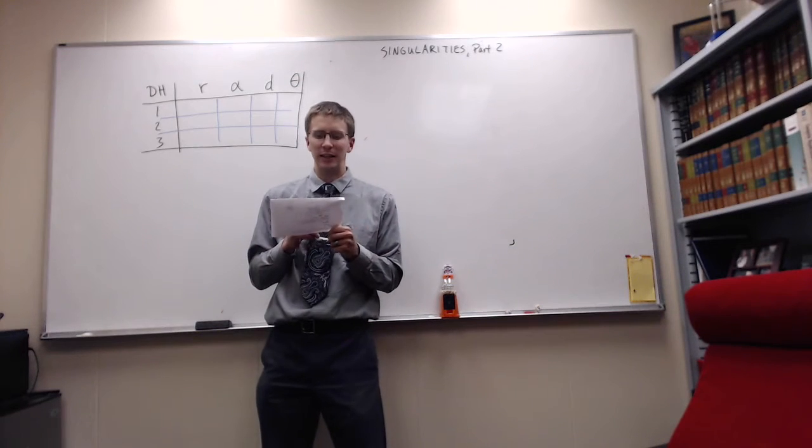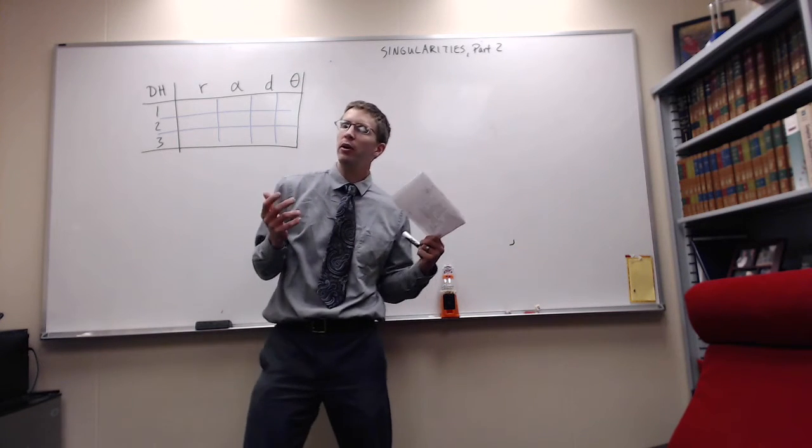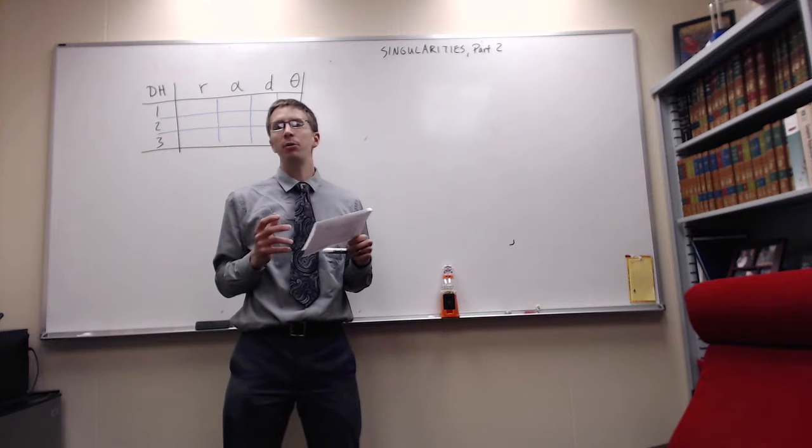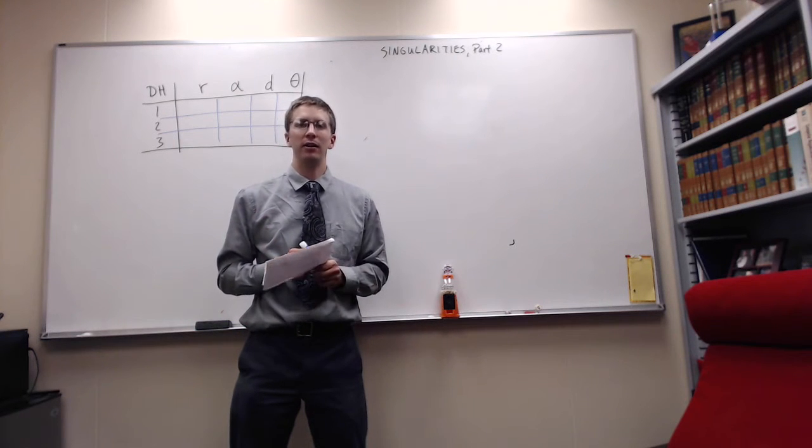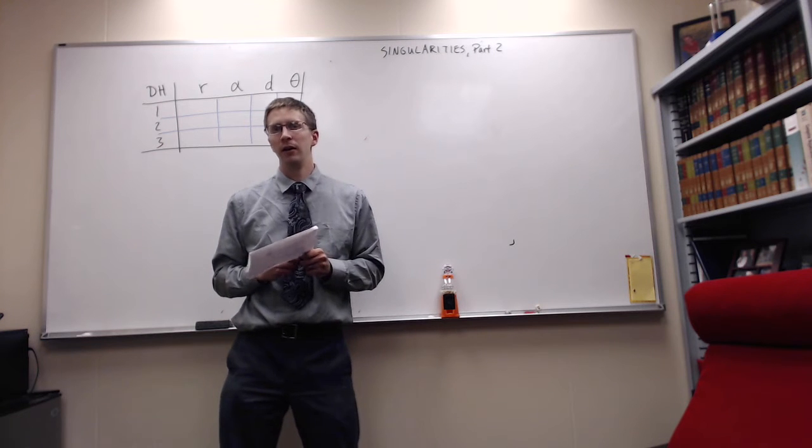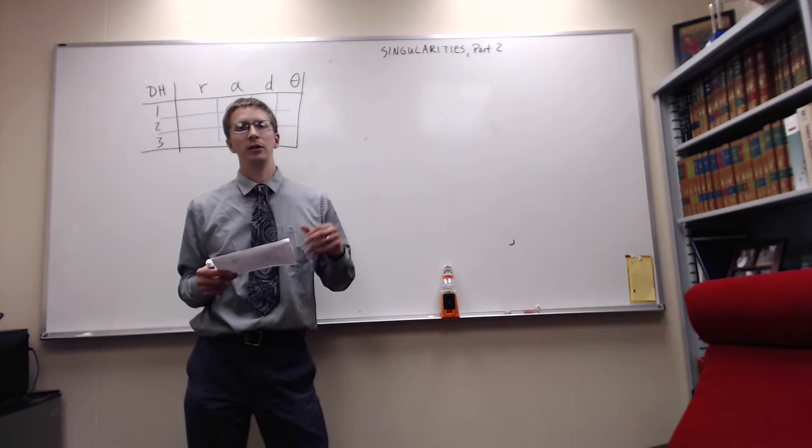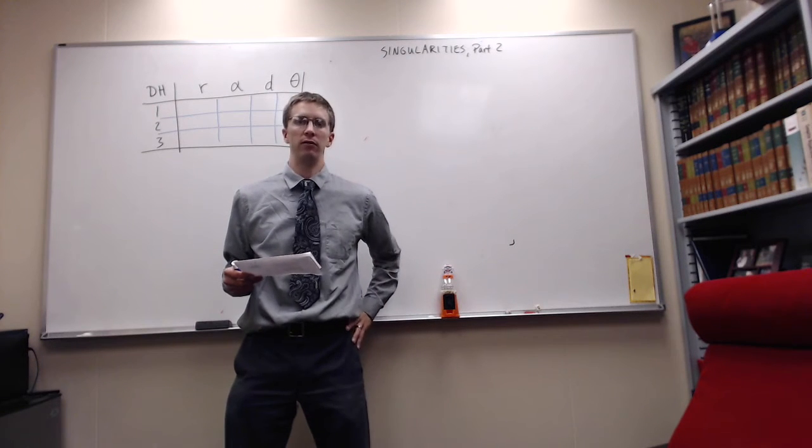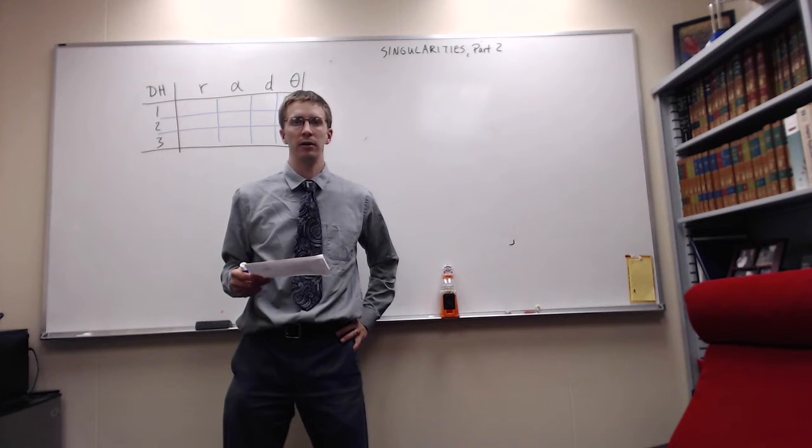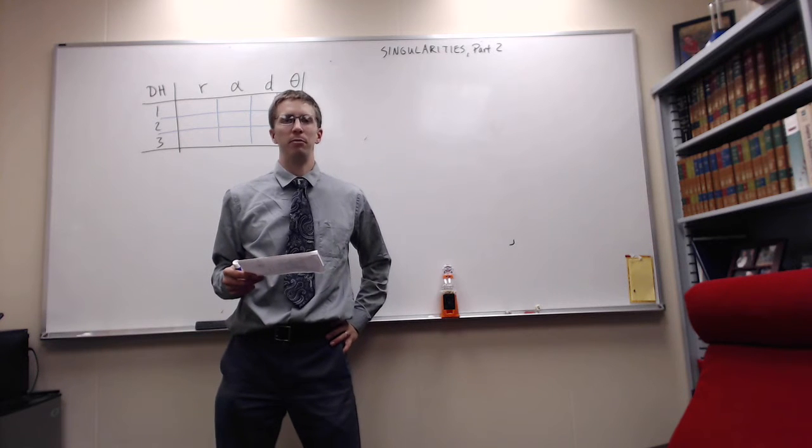All right, this is our second example about singularities. What I'm going to do is give you the DH parameters for a given robot, and then I'm going to give you the Jacobian.